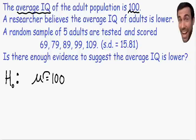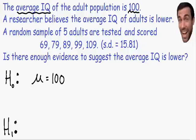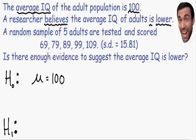The null hypothesis is always written with an equal sign — that's just a helpful tip. Now let's state our alternative hypothesis, written with H sub one or H sub a. The alternative hypothesis is always what is being claimed. In this example, the researcher believes — he is claiming — that the average IQ of adults is lower. He's claiming the average has gone down, it's decreased. So, our alternative hypothesis is that mu, the average, is less than 100.